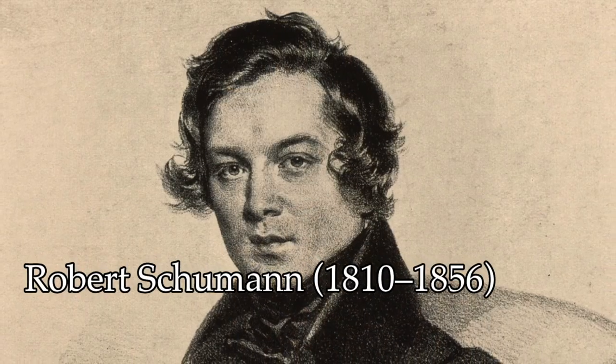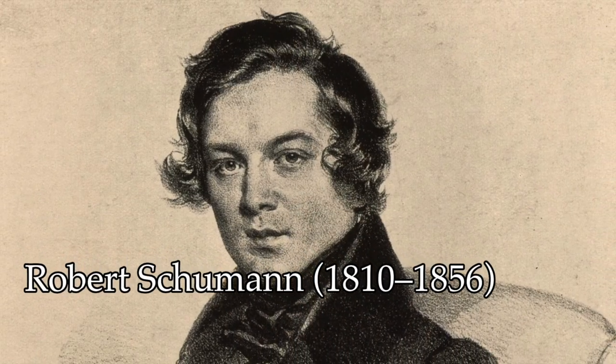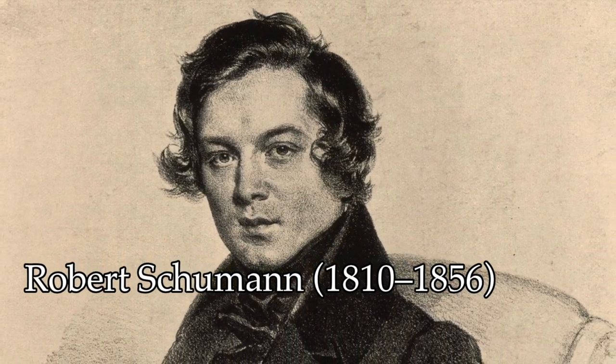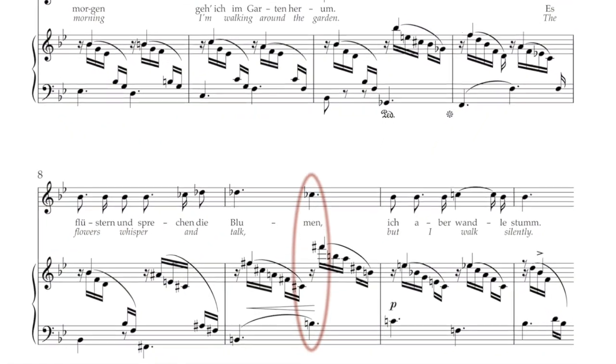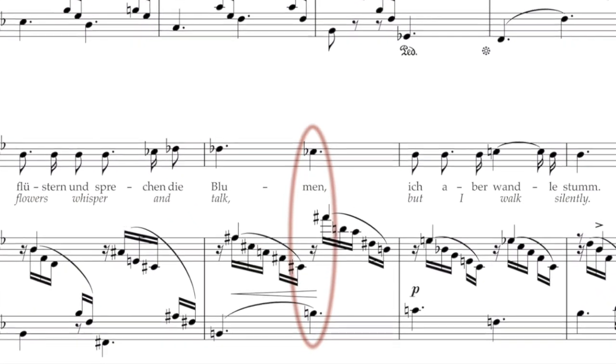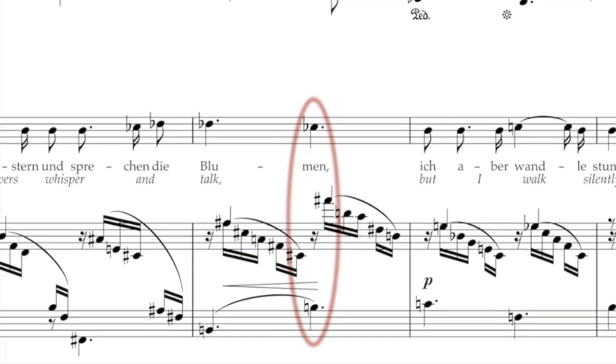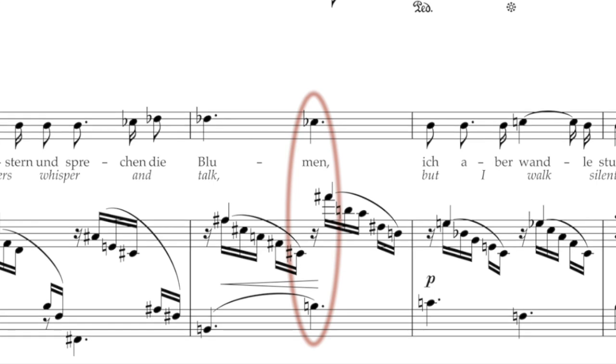Chances are that the composer is using it in a moment of tension that then resolves to something else. The most audacious example of this that I know of is when Robert Schumann decided to put a B natural up against a C flat in the twelfth song of his Op. 48 song cycle, Dichterliebe. Yes, this is a diminished ninth — and yes, there is a pretty good reason for it.